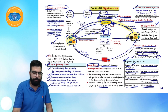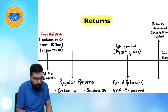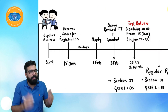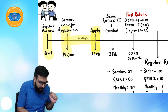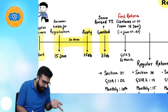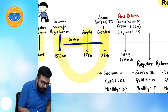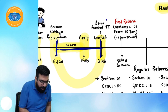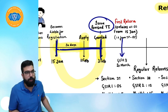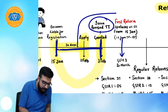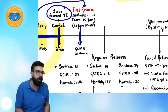Now let's discuss Returns. Once a person becomes liable to register, they must apply within 30 days. If registration is granted, it is valid from the date of becoming liable. Between the date of becoming liable and the date of grant, any supplies made require a revised tax invoice. After the first return (disclosing all revised tax invoices), regular returns begin under Section 37 — GSTR-1 for outward supplies, filed by the 10th.